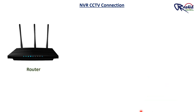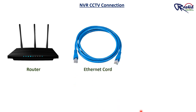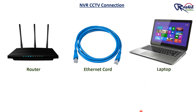You can monitor your CCTV cameras on your mobile phone. You need a router or any kind of internet connection connected to your NVR. An Ethernet patch cord is required to make the connection between router and NVR. You need a laptop for configuration and IP setting of all cameras.